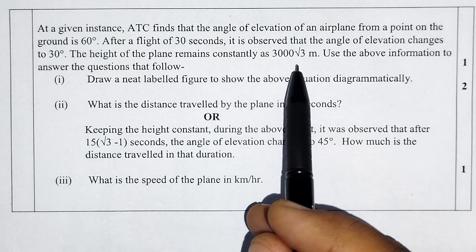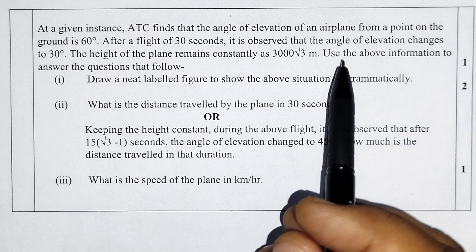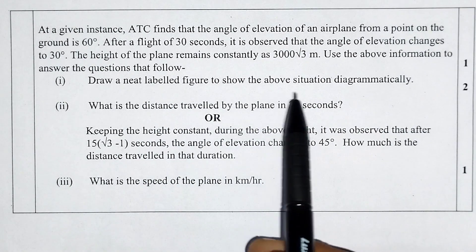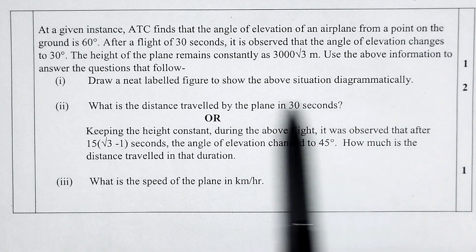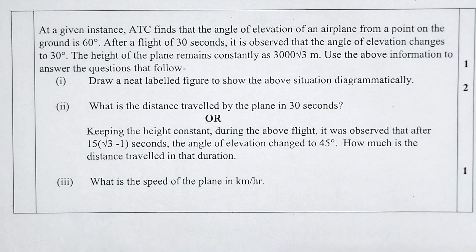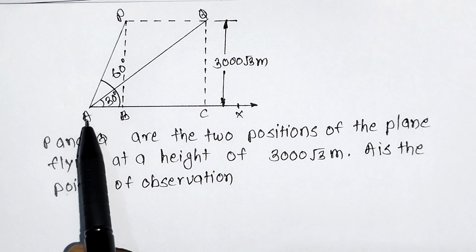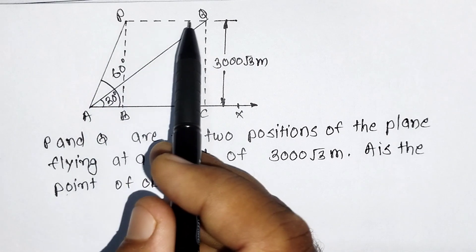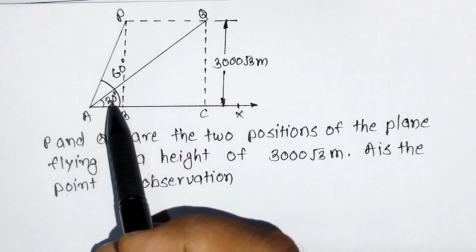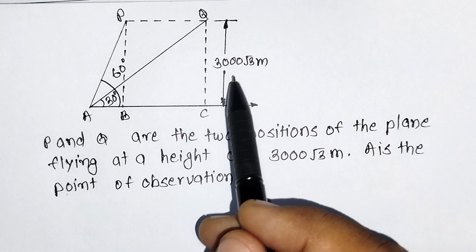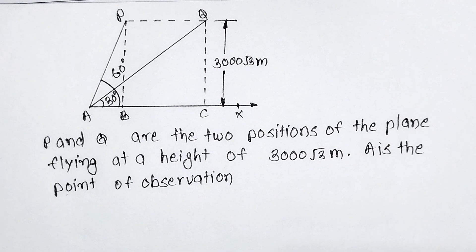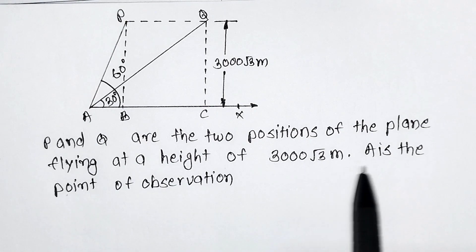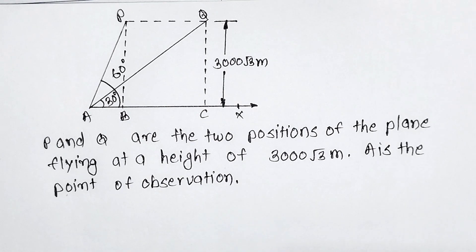Question 1: Draw a neat labeled figure to show the above situation. Diagrammatically, we can understand the situation like this — the ATC point is A on the ground. The plane is first at position P, observed at angle of elevation 60 degrees. After 30 seconds it moves to Q, where the angle of elevation reduces to 30 degrees. The height remains constant at 3000√3 meters. P and Q are the two positions of the plane flying at height 3000√3 meters; A is the point of observation.